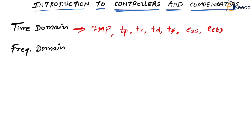Percentage MP is the maximum peak overshoot. Tp is the peak time. Tr is the rise time. Td is the delay time. Ts is the settling time. ESS is the steady state error. And E of T — since it is changing with respect to time, we call it E of T, which means it is a dynamic error.